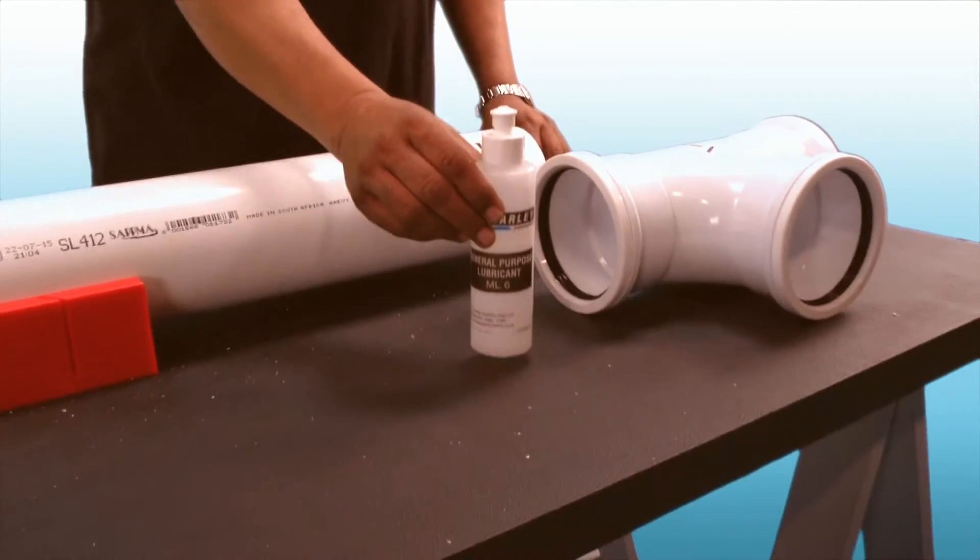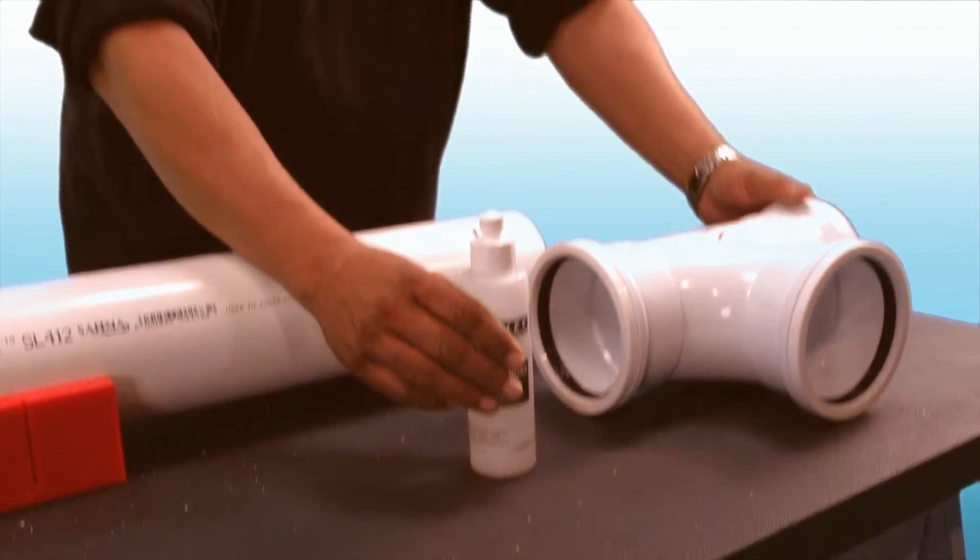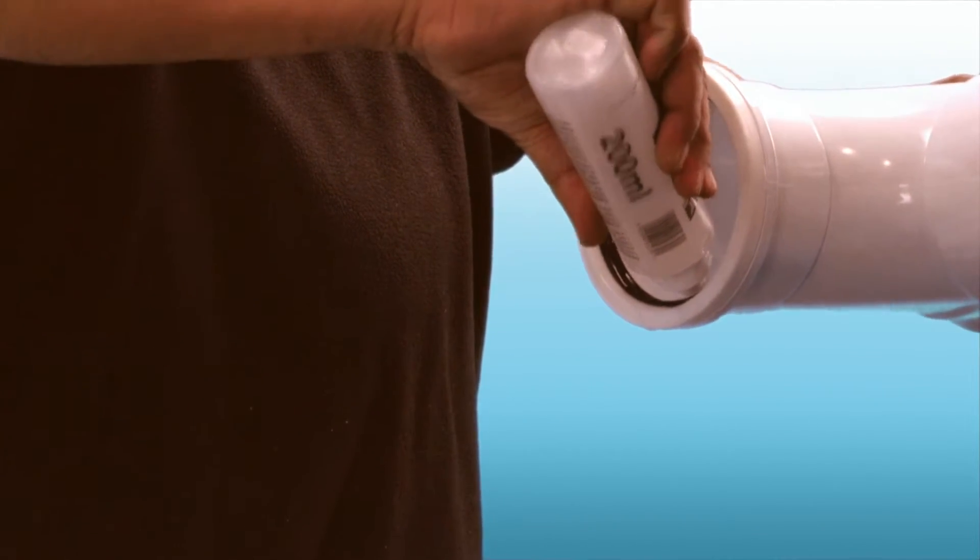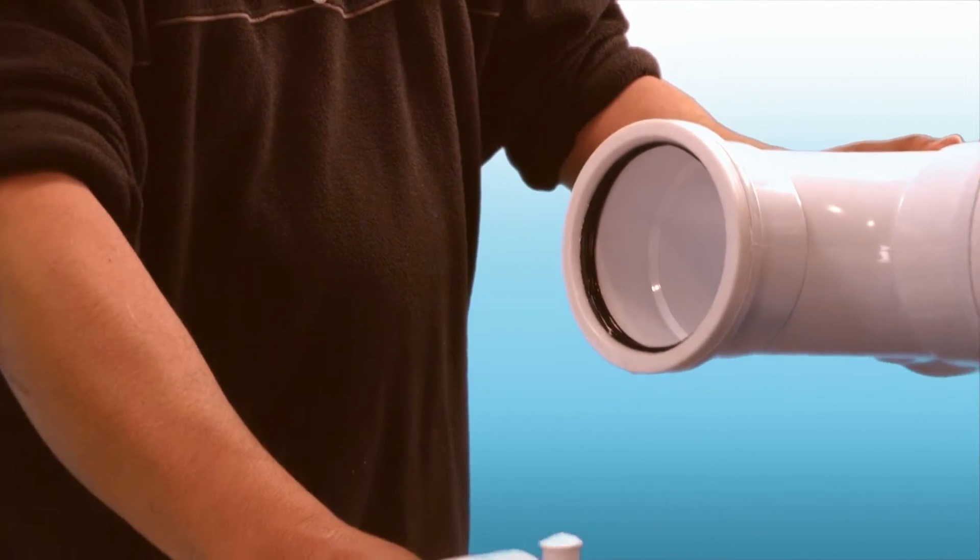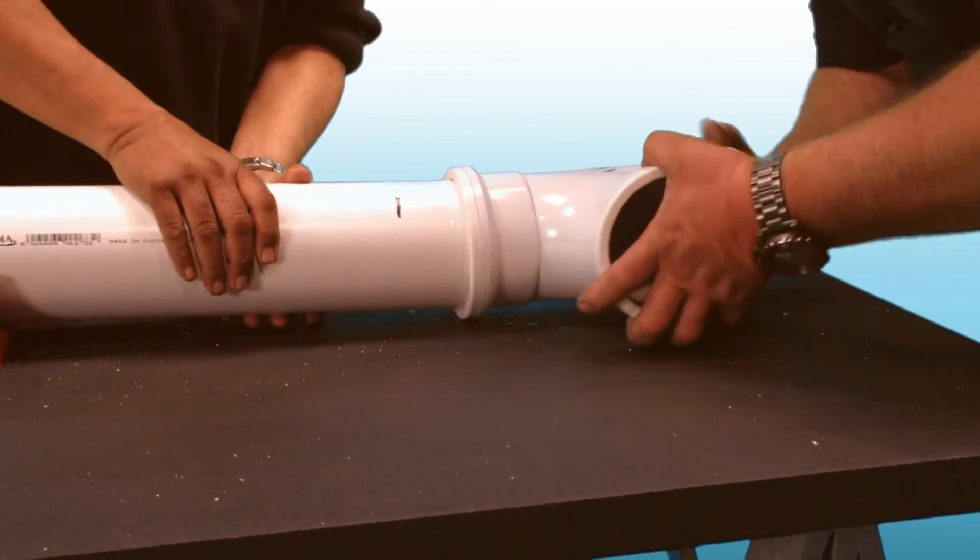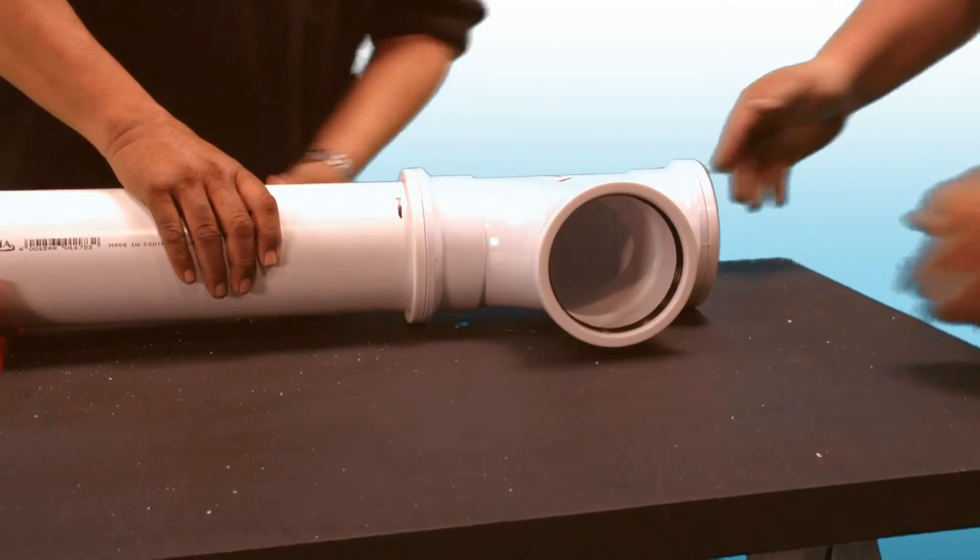Ensure that the B-ring seal is correctly positioned in the socket recess of the fitting. Apply a small amount of Marley lubricant to the chamfered pipe end and the seal, and push the pipe or spigot end firmly through the B-ring seal, adjusting until the insertion depth has been reached.